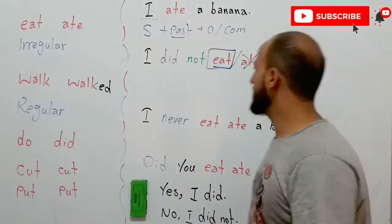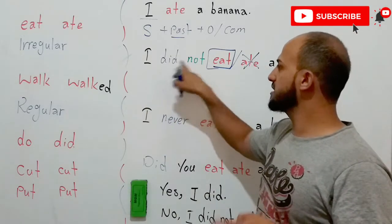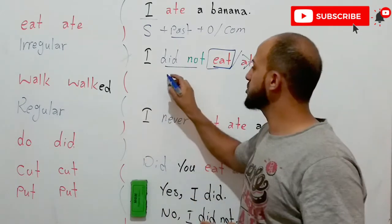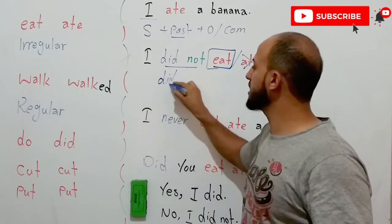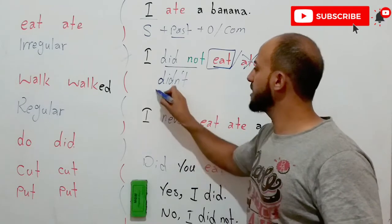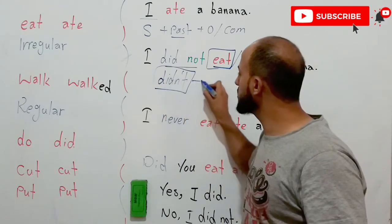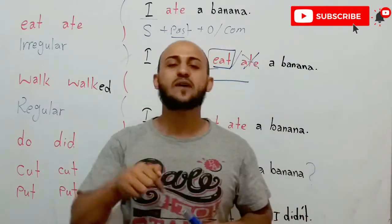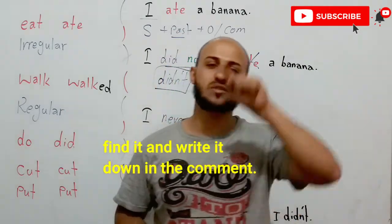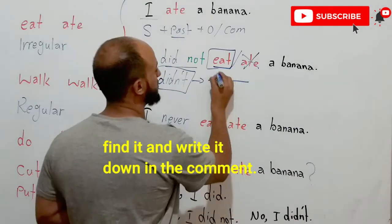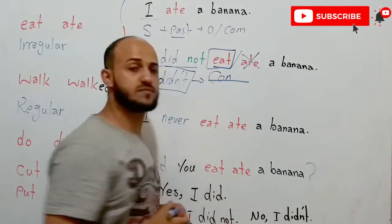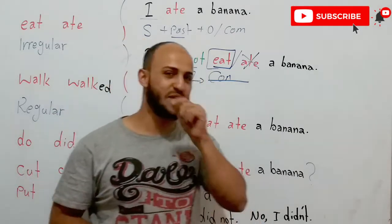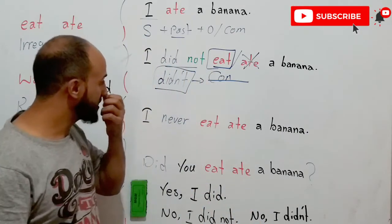Now, why did I write 'did not'? Because if I want to put them together, I need to combine them. What do we call this in English? Think about it and write it in the comments. It starts with C-O-N — find the rest and write it down in the comments.